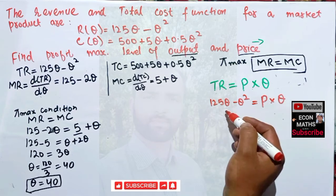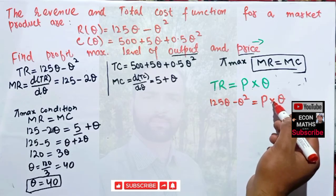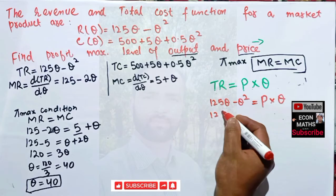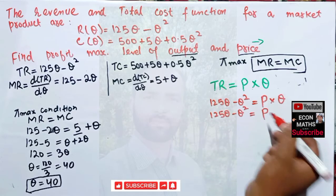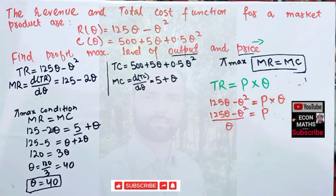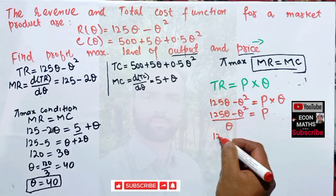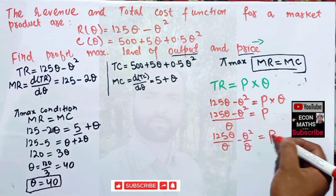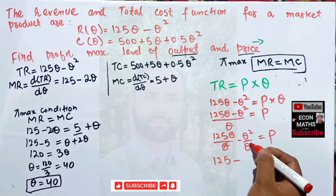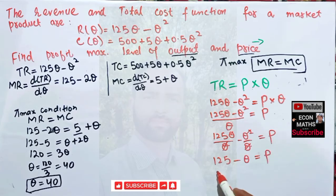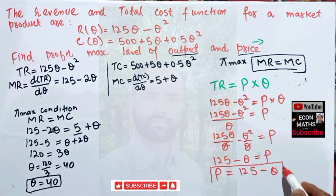We can divide both sides by Q: (125Q minus Q squared) divided by Q gives 125Q/Q minus Q squared/Q, which simplifies to 125 minus Q. Therefore, our inverse demand function is P = 125 minus Q.